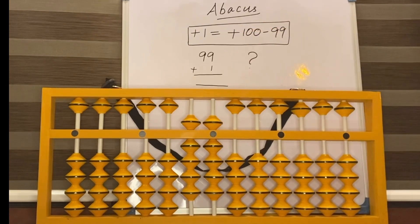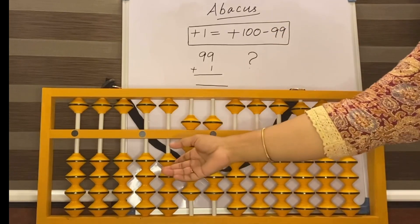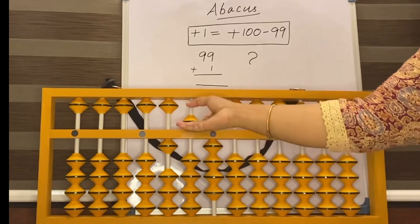The abacus formula is: add 1 equals add 100 less 99. Same like add 1 equals add 10 less 9. The same method, only the place value changes. Now see here, add 100 less 99.